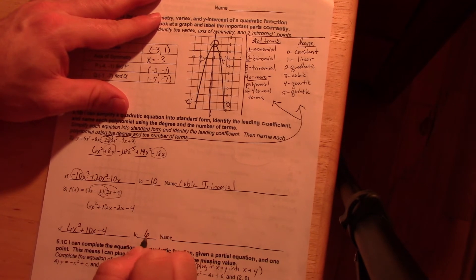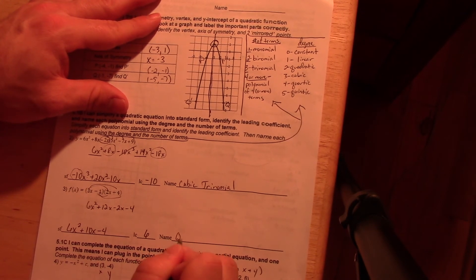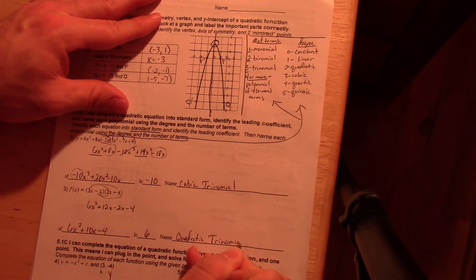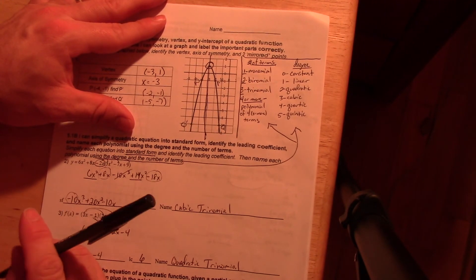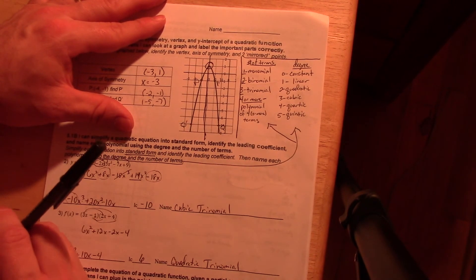Write it in standard form. The leading coefficient is six, because it's the first term. And this is a quadratic trinomial. Make sure you know what all of these are up here. I'm not going to give you two trinomials. I can assure you of that. And I likely won't give you four or five, but you should know them anyway.